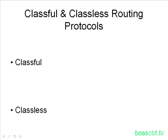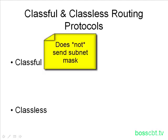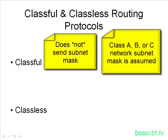We'll begin with classful. A classful routing protocol is known by not sending subnet mask information along with any routing updates it sends to other routers. The subnet mask is not sent along with the subnet number. That means that routers using a classful routing protocol have to assume a classful subnet mask — so either a Class A, Class B, or Class C network subnet mask is assumed because that information is not sent along.